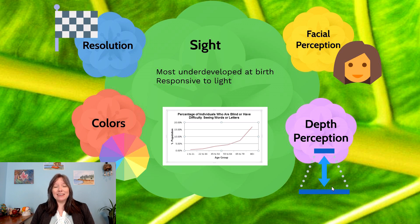For instance, the way they perceive things varies in terms of their ability to determine resolution, color, facial perception, and depth perception than what it will be in adulthood.